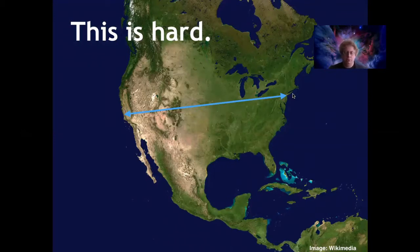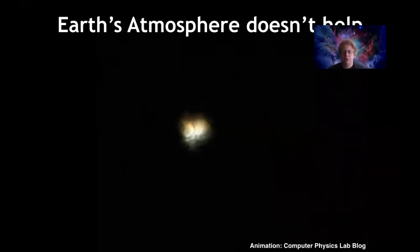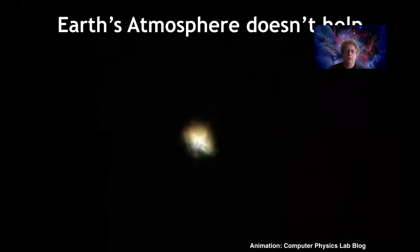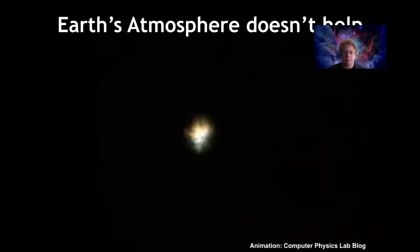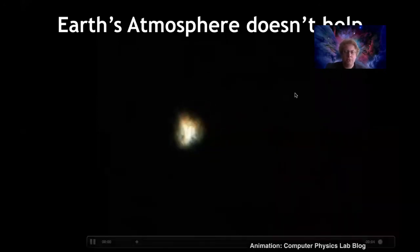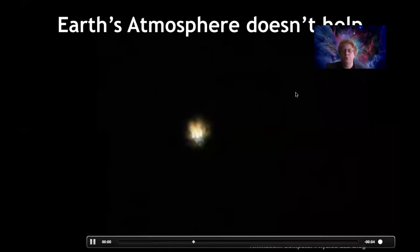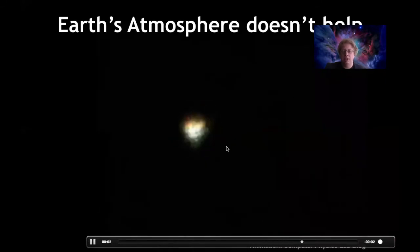This is an extremely difficult measurement to make, and for many, many years it just wasn't practical to do at all. The other thing that makes this difficult is that Earth's atmosphere doesn't help. If you look very closely at a star through our atmosphere, it doesn't remain steady.